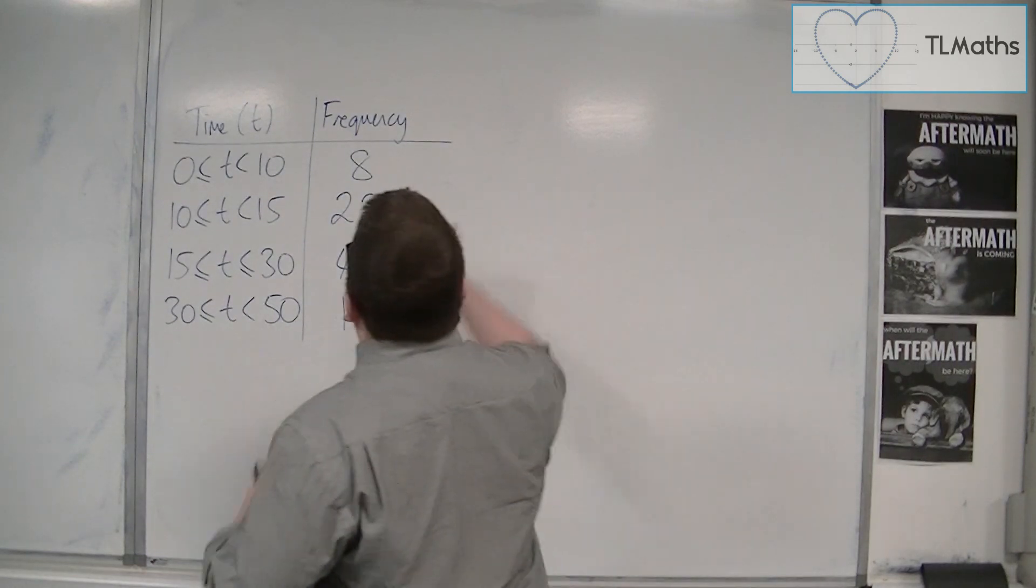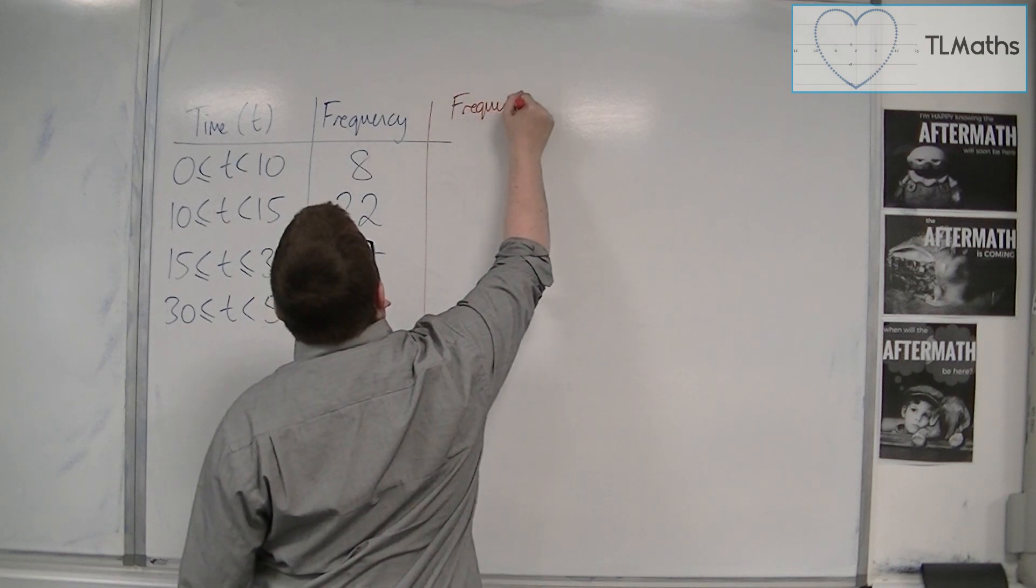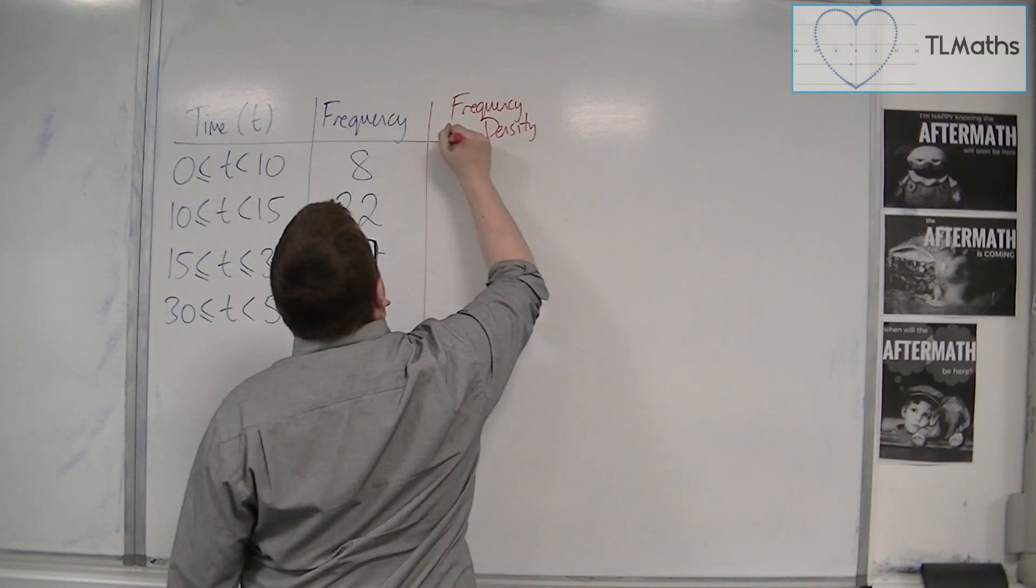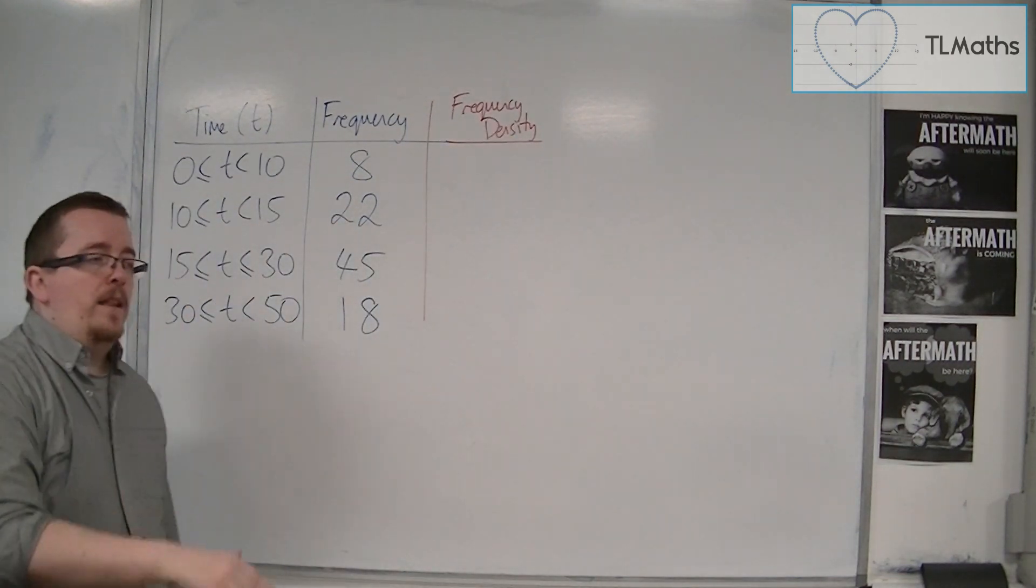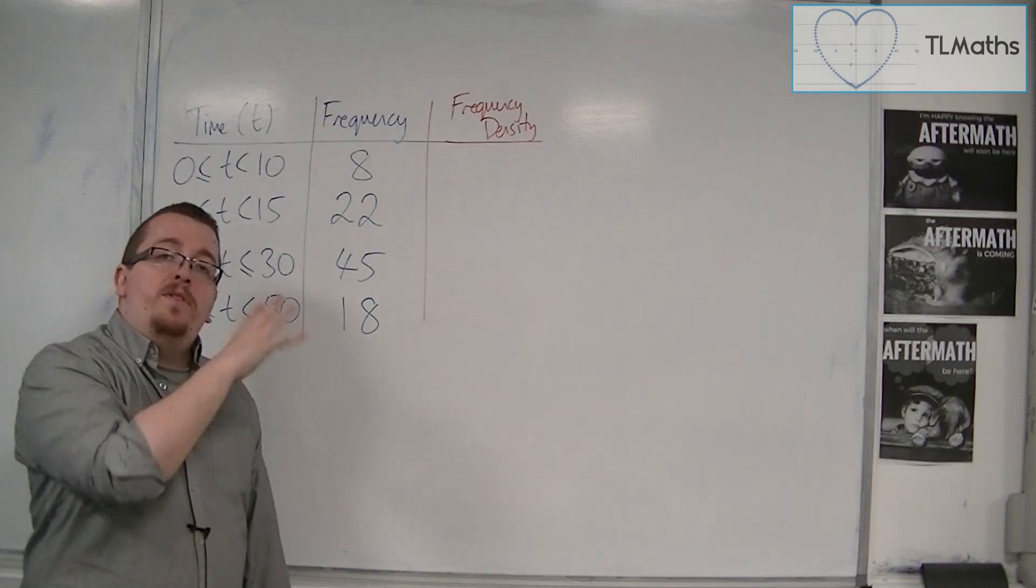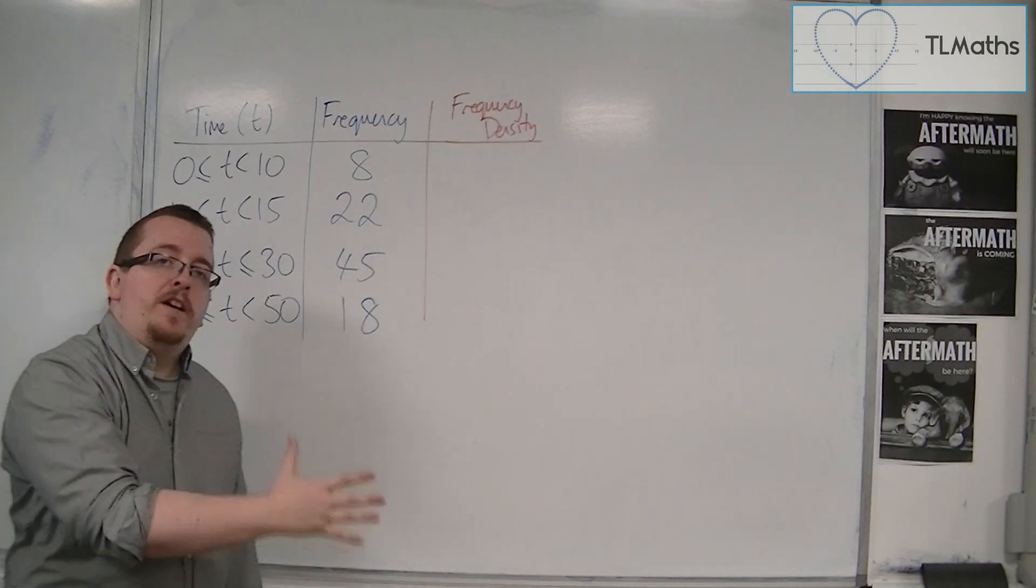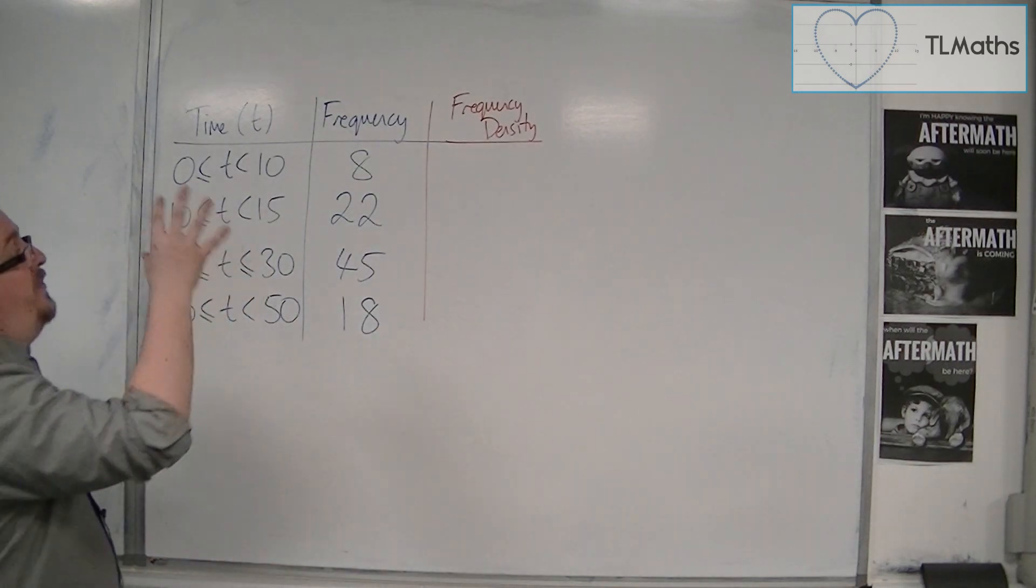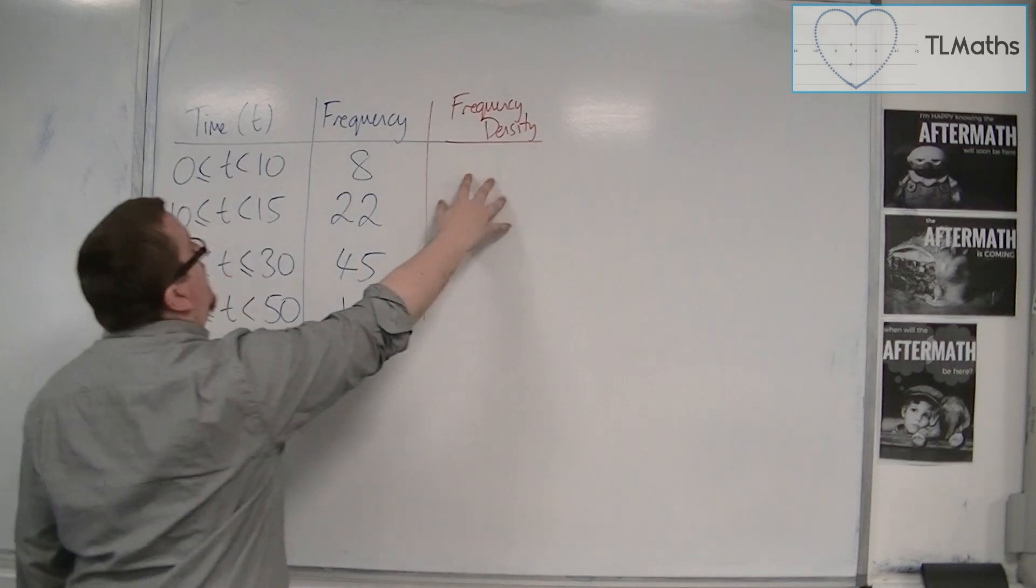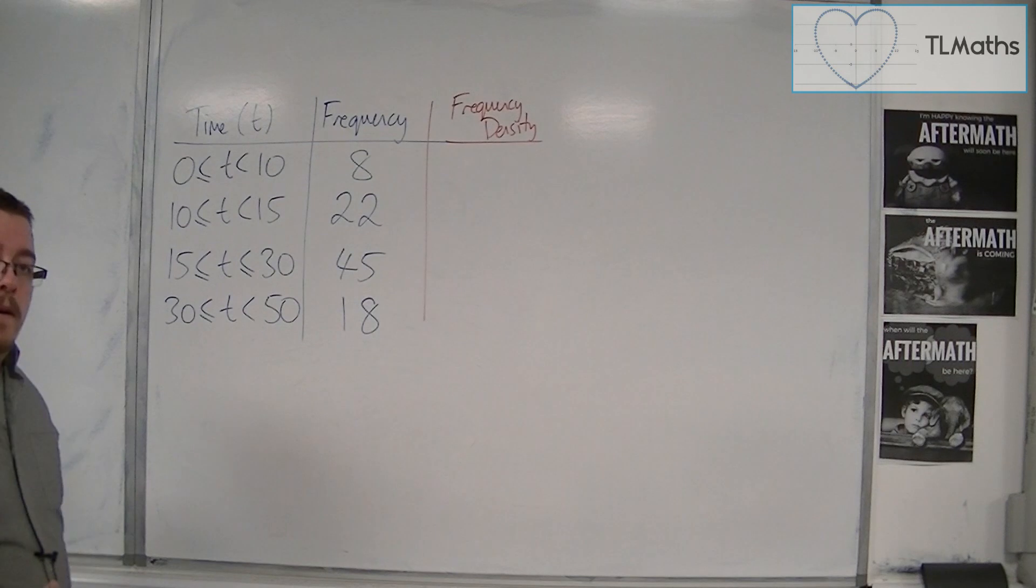So we build in a new column called frequency density. Which effectively turns this into not looking at the height of the bars, but you're now going to look at the areas of the bars. And the area tells you how much is there. Now the frequency density can be calculated by dividing each of your frequencies by the widths of each of your bars.